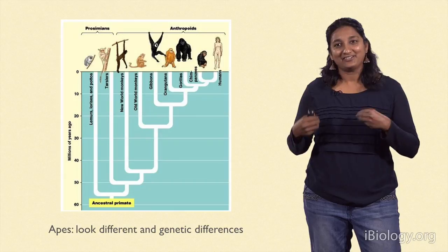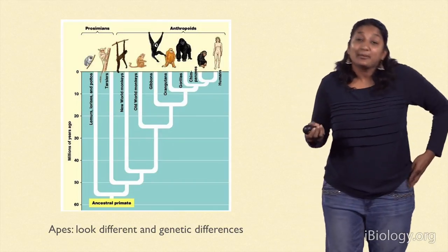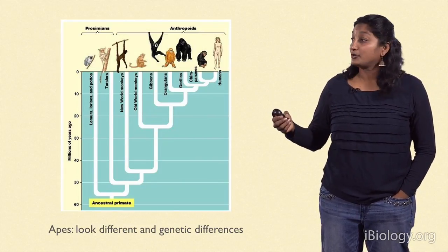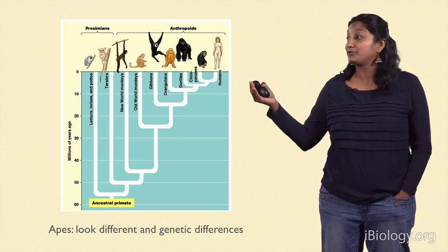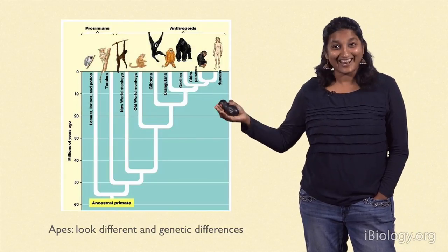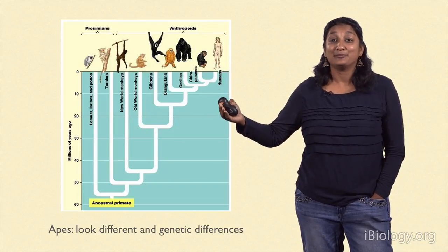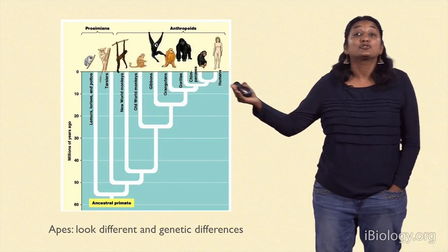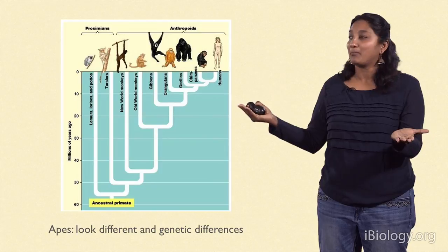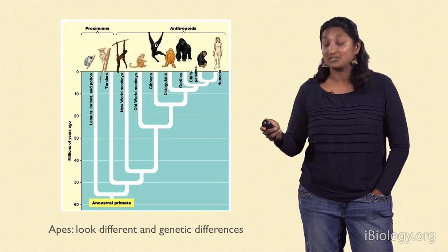Taxonomists — as humans, we have this desire to put things in boxes and say this is one species, this is another. In some cases this might be relatively easy. For example, with apes, gibbons look very different from gorillas and chimpanzees and from humans. And when we look at their DNA, there are several differences which are reflected, allowing us to build a phylogenetic tree. This allows us to understand that there are multiple species of apes which look different and are genetically distinct as well.